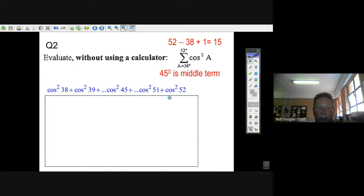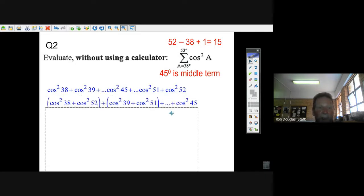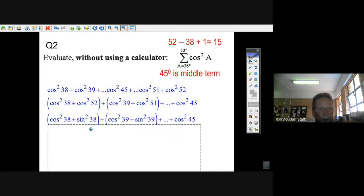If you have the cosine of 38 degrees or the cosine of 52 degrees, you should be aware the co-function rule tells you that the cosine of 52 is exactly equal to the sine of 90 minus that angle. That's the co-function, so it'll equal the sine of 38.